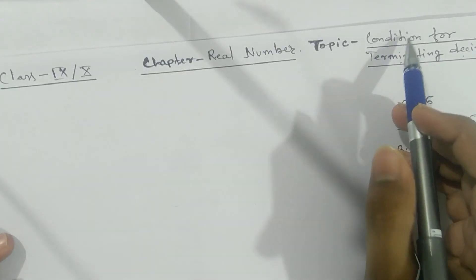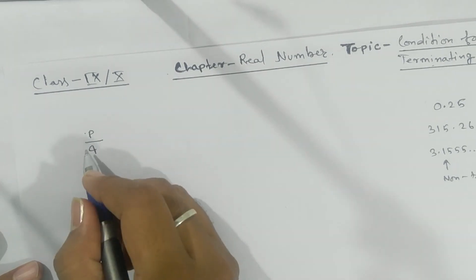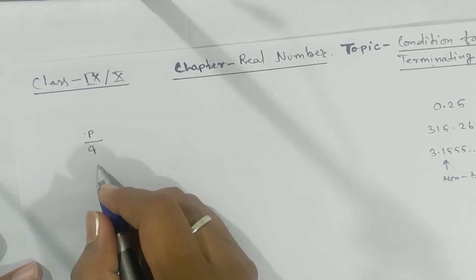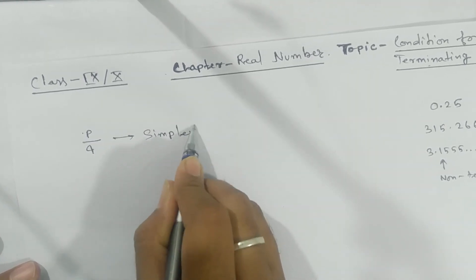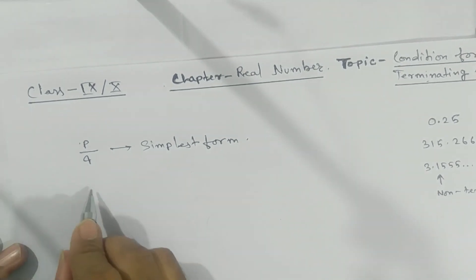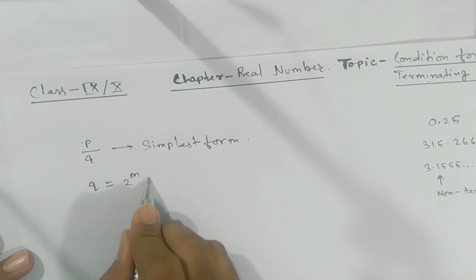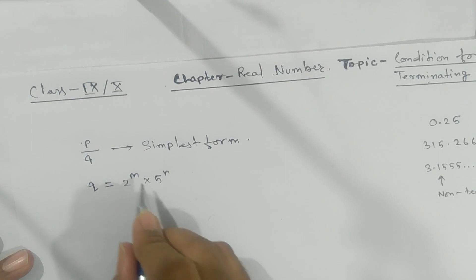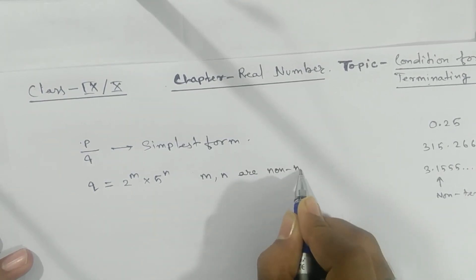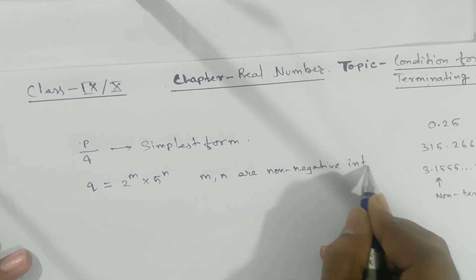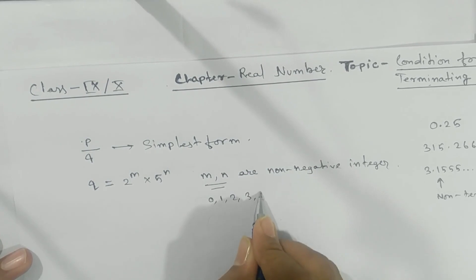So what is the condition? Here they are asking about the condition for terminating decimals. For any fraction P by Q, you cannot tell by just looking at it whether it is terminating or non-terminating. First, you have to reduce it to its simplest form, then look at the denominator Q. Q should be in the form 2 to the power M into 5 to the power N, where M and N are non-negative integers — that means M or N may be 0, 1, 2, 3, and so on.